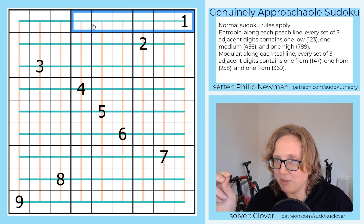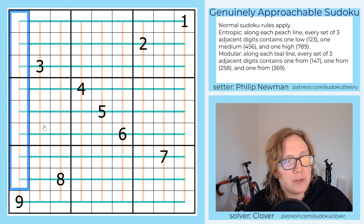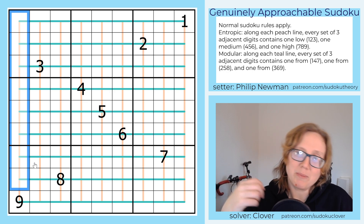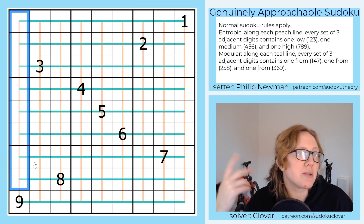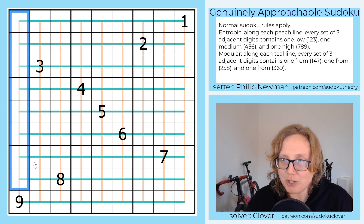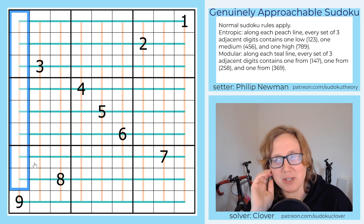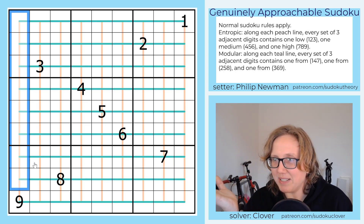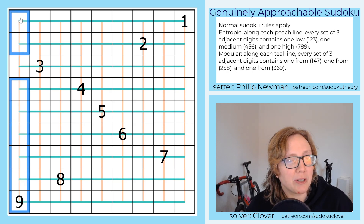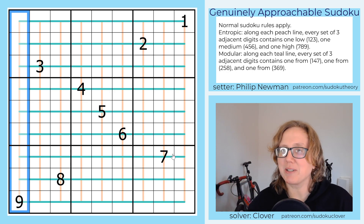The same thing is true for the other type of lines in this puzzle: the entropic lines. Those are the peach lines going vertically. Along those, it's the exact same rule, except instead of grouping digits based on their modulus, we group them based on whether they're low, medium, or high. Low digits are 1, 2, 3; medium digits are 4, 5, 6; high digits are 7, 8, 9. Every set of three adjacent digits has to have one from each group, which implies a repeating pattern of low, medium, high, low, medium, high — or in a different order. You can simply read the entropic lines rule as: along an entropic line, there always has to be a consistent repeating pattern of low, medium, high.